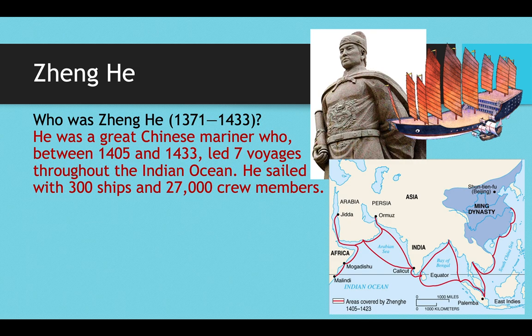He did not travel for the purpose of settlement. He traveled for exploration, trade, and also to collect tribute. He would arrive on the shores with his 300 massive ships and 27,000 crew members and basically intimidate local peoples into paying tribute to the Ming Dynasty. These were seven voyages over the course of three decades, and his ships were absolutely massive — sometimes having as many as nine masts. As a comparison, you can see the Santa Maria, which Christopher Columbus sailed to reach the New World.